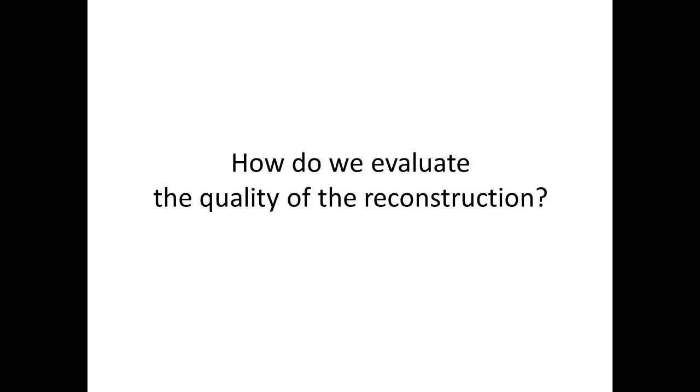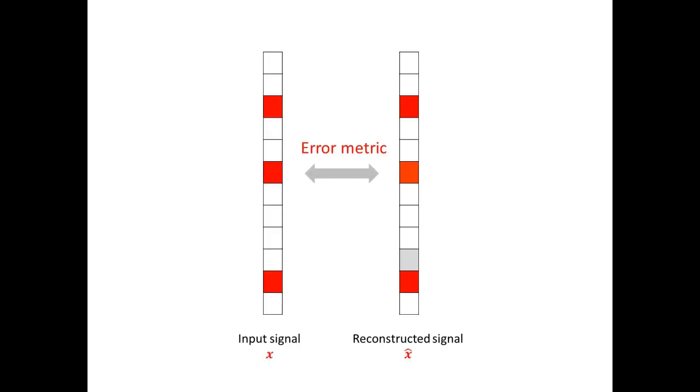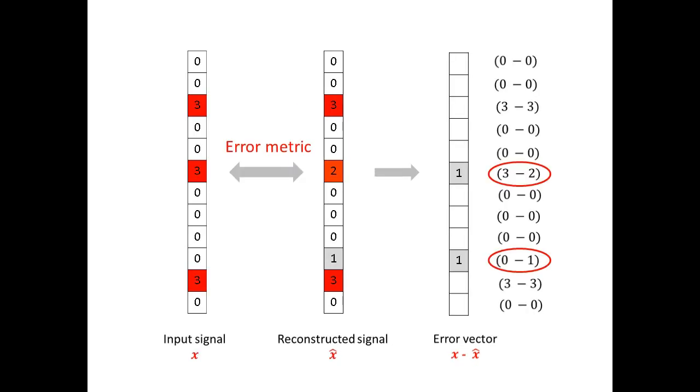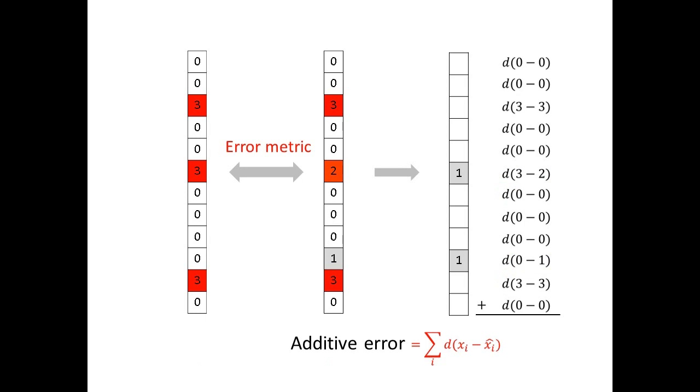Is our reconstructed signal x hat any good? In order to design good reconstruction algorithms, we're going to need to quantify the reconstruction quality. To evaluate the quality of signal reconstruction, we define an error metric between the input signal x and the reconstructed signal x hat. We begin by calculating the error vector. To do so, we subtract the reconstructed signal vector x hat from the original x.